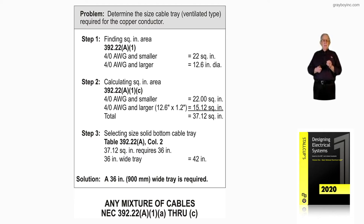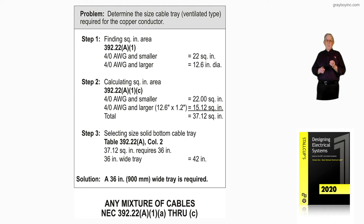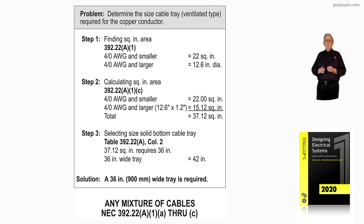Step two is the application of 392.22A1C. The four or smaller was listed as 22 square inches, but the four or larger cables was 12.6 inch diameter. The table in that column said take 1.2 times 12.6, and we come up with 15.12 as a square inch area. Total it: 37.12 square inches, putting everything into square inches.